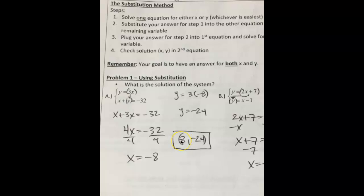It looks like I forgot to put the negative sign here, but it should be negative 8. I would do one last thing and plug my answer into the other equation. I already used y equals 3x, so I'd plug negative 8 and negative 24 in for x and y into the bottom equation and check to see if it's actually a solution. Negative 8 plus negative 24 actually is negative 32, so at that point I know it's a solution.